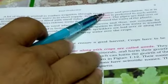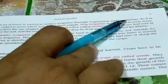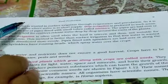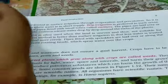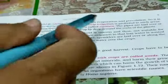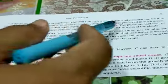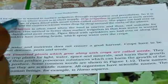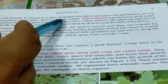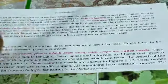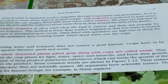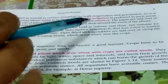A lot of water is wasted in surface irrigation through evaporation and percolation. Aap dekhte hon ki jab surface irrigation mein hum karte hain irrigation ka kaam, usme se bahut saara paani aisa hota hai jo evaporate ho jaata hai, ya percolation karke neeche chala jaata hai. So isliye it is not suited to areas where water is in short supply.